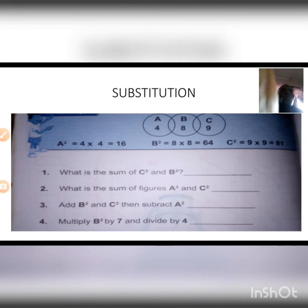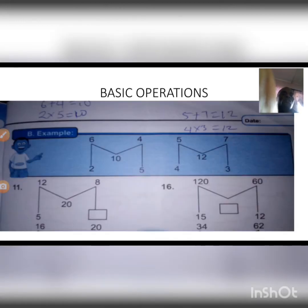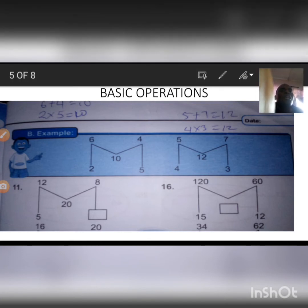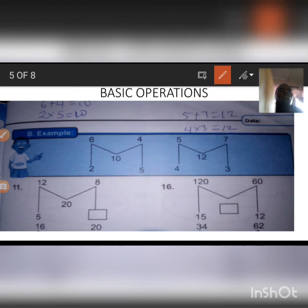Now let's look at the second example. This example has a shape that looks like an M. Now to get the number at the middle, it is very obvious that we need to add the number at the top. 6 plus 4 gives a 10.